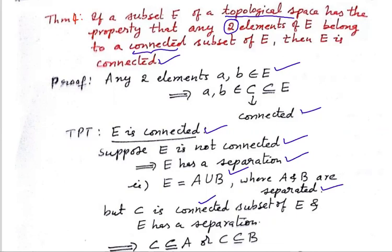C is a connected subset of E, and E has a separation — E is nothing but A union B. We have a theorem — Theorem 3 of connected spaces. Using Theorem 3, we get that C is either completely in A or C is completely in B. So C, the connected subset of E, must lie entirely in A or entirely in B.